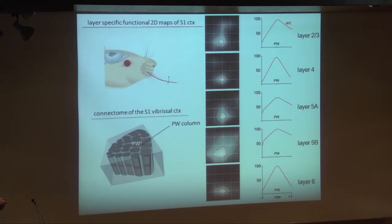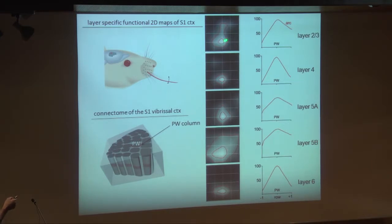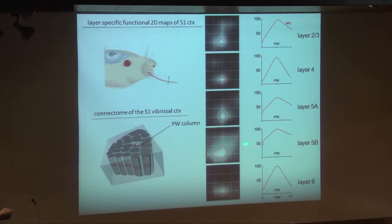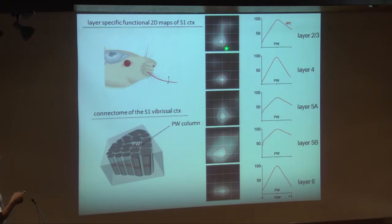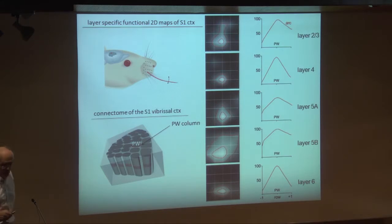If one does this in a systematic way - this is work by Christian Decoche - for different layers, one gets the following picture. We use the same stimulus paradigm, but record from different cells: the ensemble of cells in layer 2-3, in layer 4, layer 5-A, layer 5-B, and layer 6. You can see there are very large differences in the spread of the response or the representation. A stimulus would be represented by multi-columns up to 12 columns in layer 5, where it is restricted to a single column in layer 4. You can easily quantify this by the half-width of the Gaussians fitted to these data.